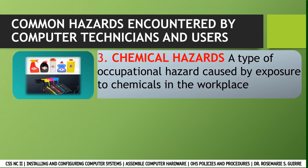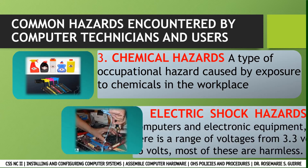Chemical hazard is a type of occupational hazard caused by exposure to chemicals in the workplace. Exposure to chemicals in the workplace can cause acute or long-term detrimental health effects. There is a wide array of chemicals used with electronic equipment, including display cleaning materials, keyboard cleaning chemicals, compressed gas, dirt and dust removers, and many cleaning solvents. Some of these chemicals can be harmful if accidentally swallowed, if they get on bare skin, or if they get in your eyes.